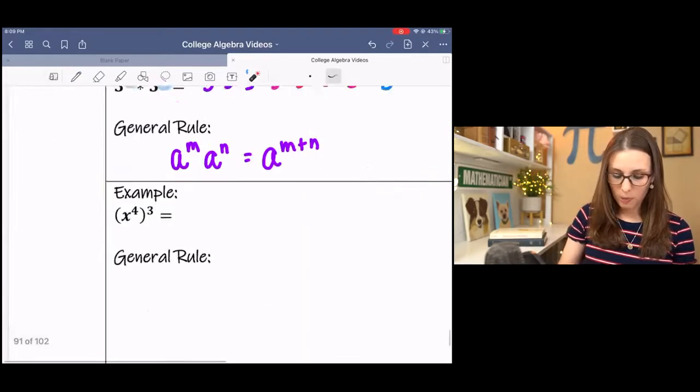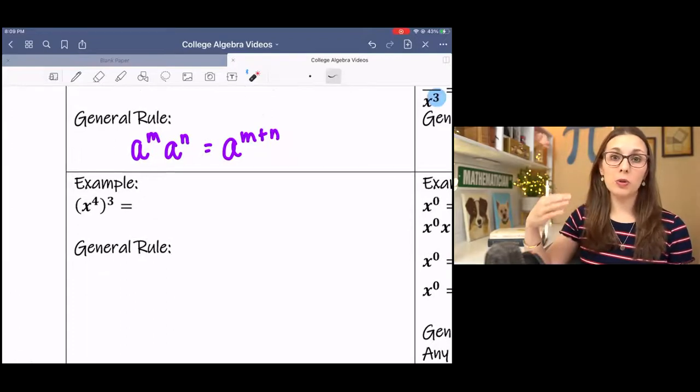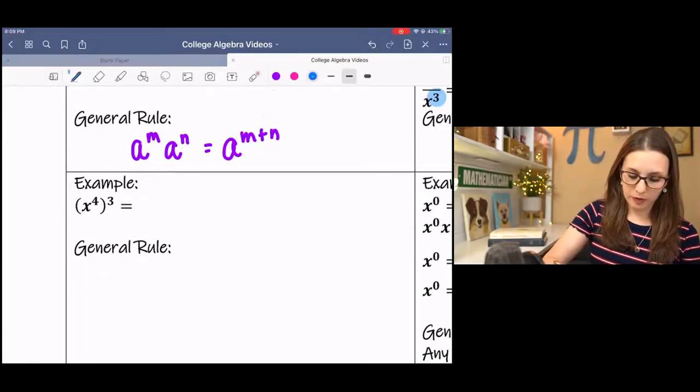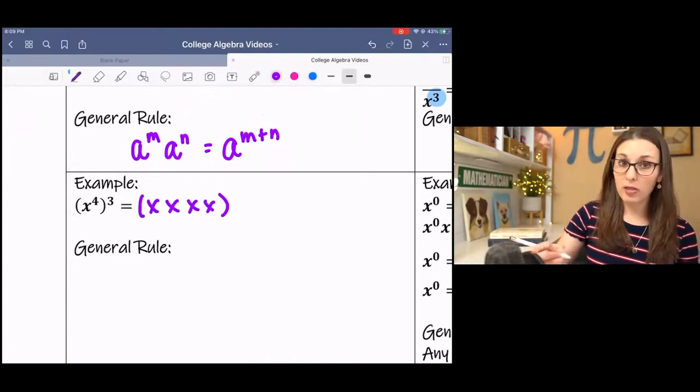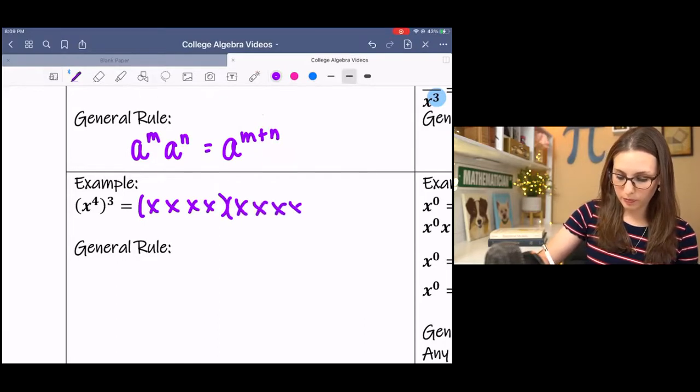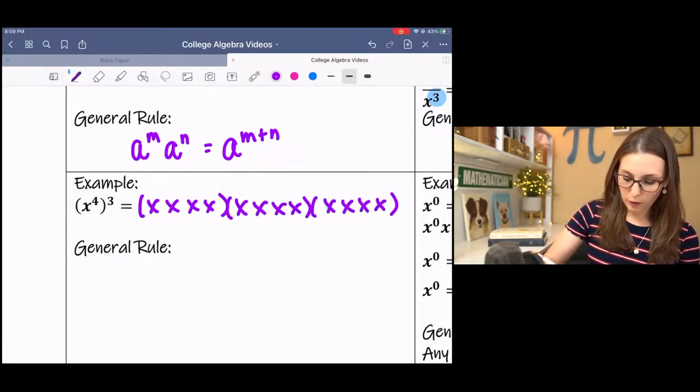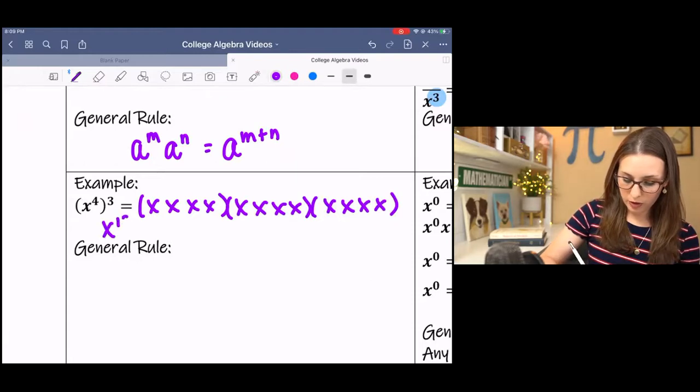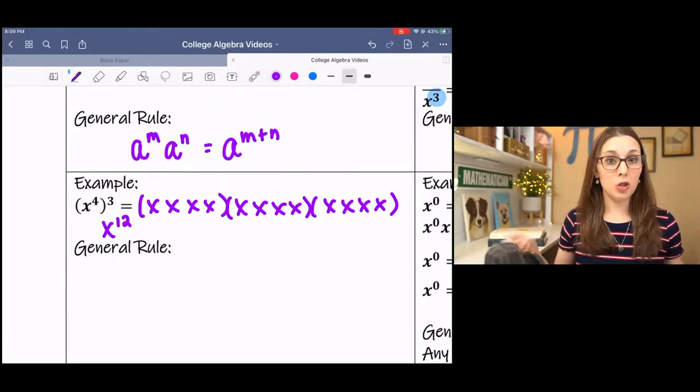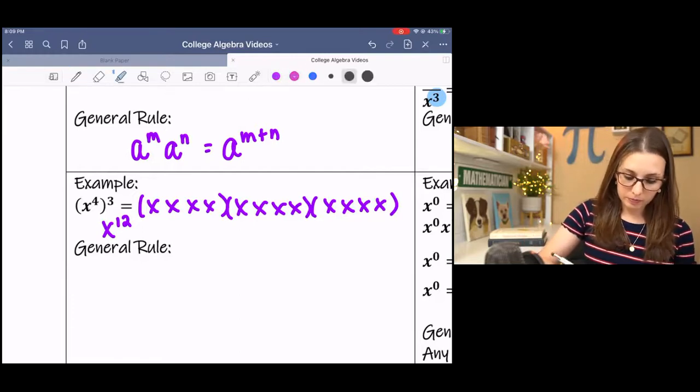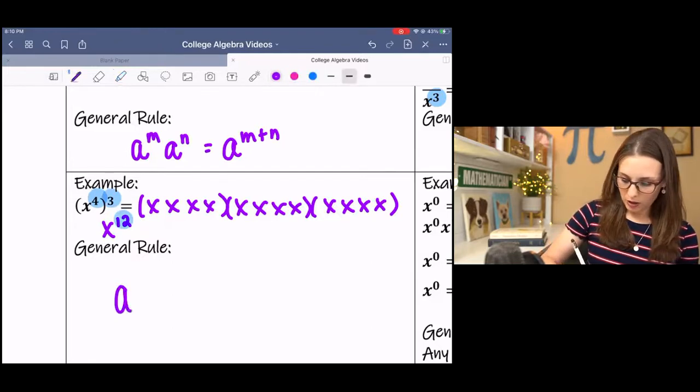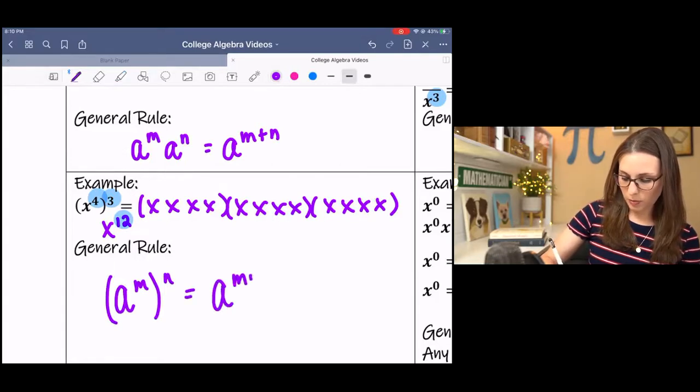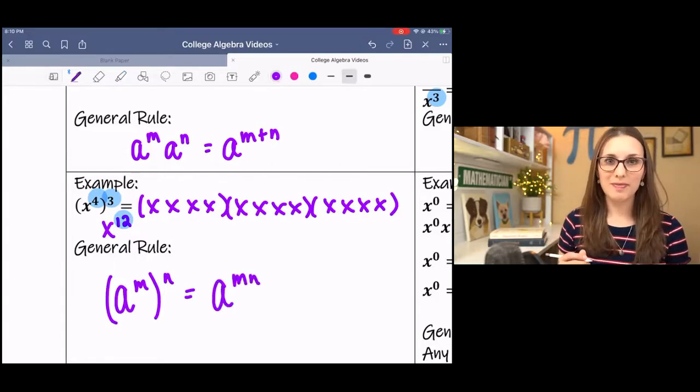Next one, I like to call it power to a power because we have an exponent raised to another exponent. This means x to the fourth written 3 times, multiplied 3 times, for a grand total of x to the 12th. x is being multiplied 12 times. Power to a power means multiply. So a to the m raised to the n means we multiply the exponents. Not too bad, right?